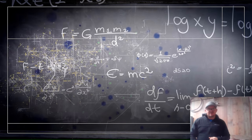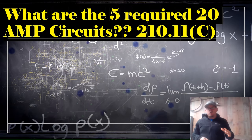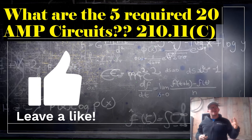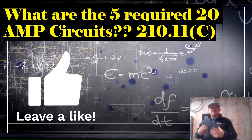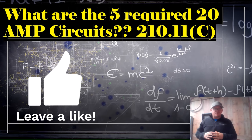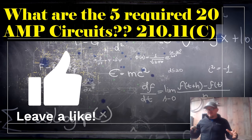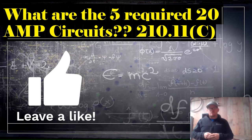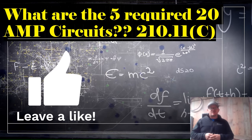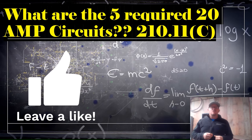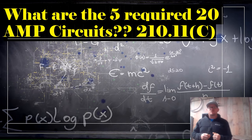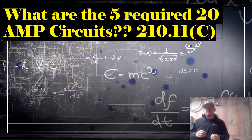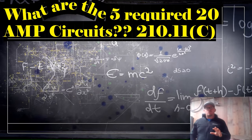Hey y'all, what's up — it's the Electrical Code Coach. Today we're going to talk about the five required 20-amp branch circuits. You can find this in Article 210.11(C). It doesn't matter if you want to run 14-gauge wire on a 15-amp breaker for all of your general lighting and receptacles in your whole home — these five required branch circuits are going to require 12-gauge wire.